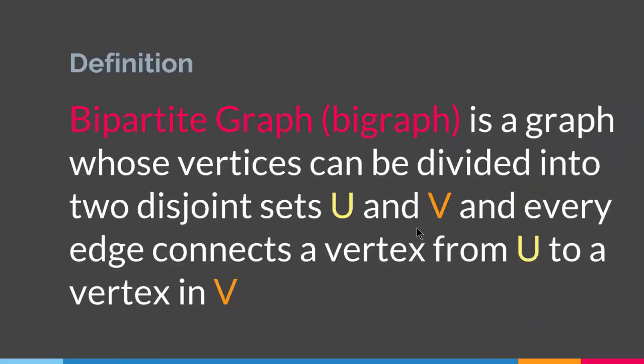To recap: a bipartite graph, or bigraph, is a graph whose vertices can be divided into two disjoint sets U and V, and every edge connects a vertex from U to a vertex in V. With this we come to the end of this lecture.